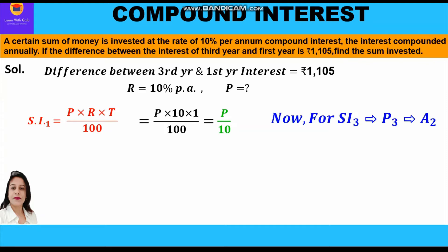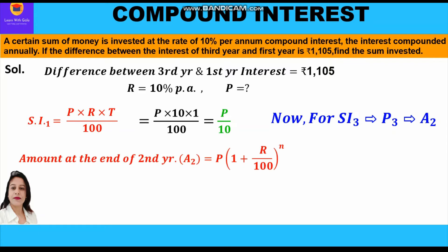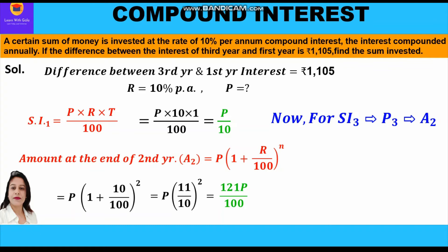To calculate the interest for the third year, we require the principal of the third year. The principal of the third year is actually the amount at the end of the second year, given by A₂ = P(1 + R/100)^n. Putting the values: P × (1 + 10/100)² = P × (11/10)² = 121P/100.